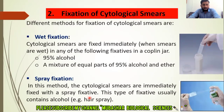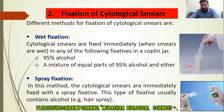The first method is wet fixation. In wet fixation, the cytological smears are fixed immediately when the smears are wet, by placing them in a coupling jar containing either 95% alcohol or a mixture of equal volumes of 95% alcohol and ether. On the right side you can see a coupling jar containing either 95% alcohol or a mixture of equal parts of 95% alcohol and ether.